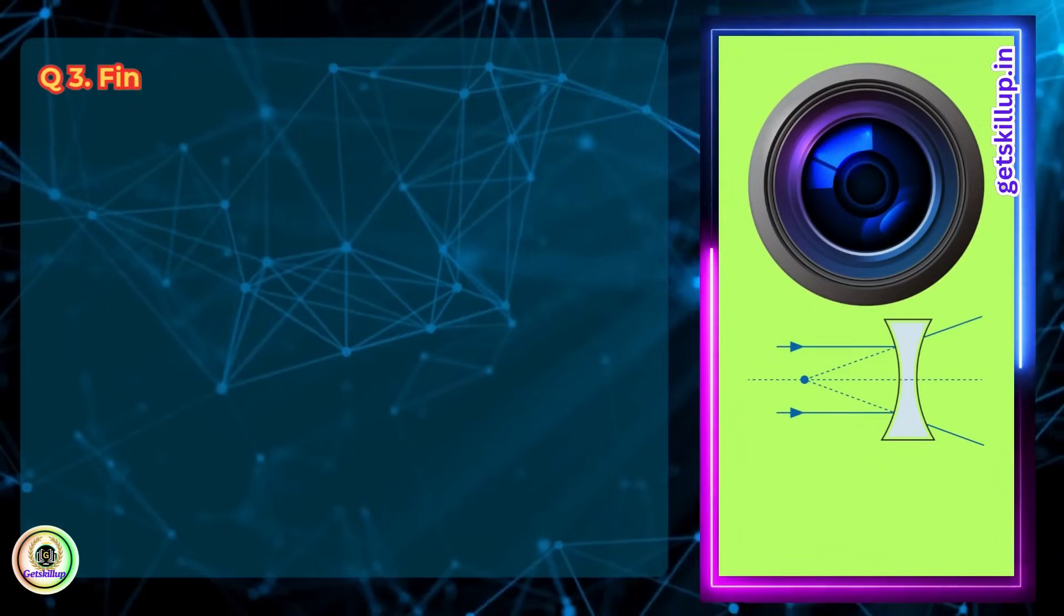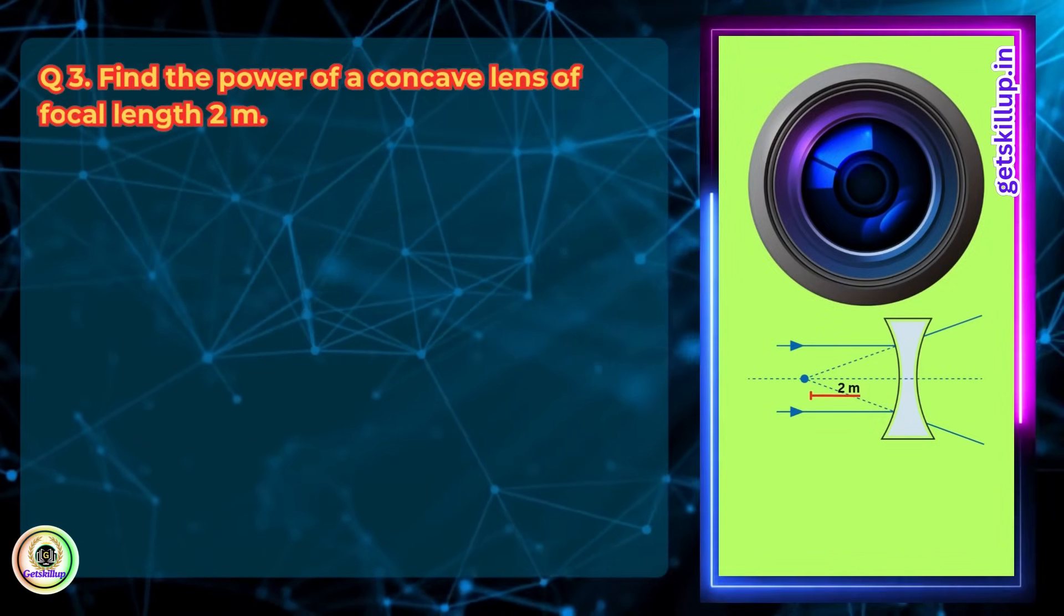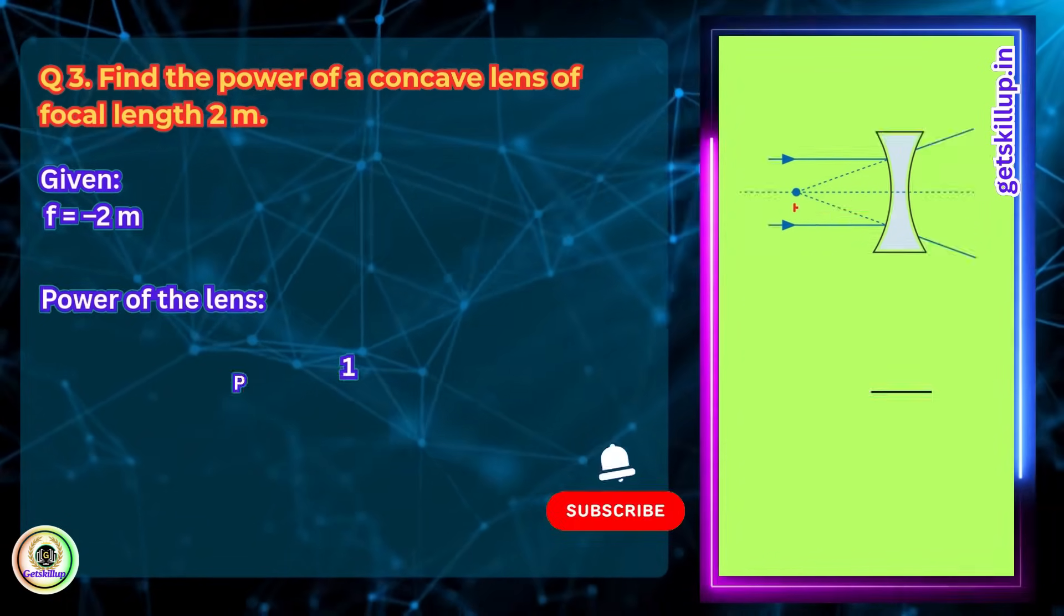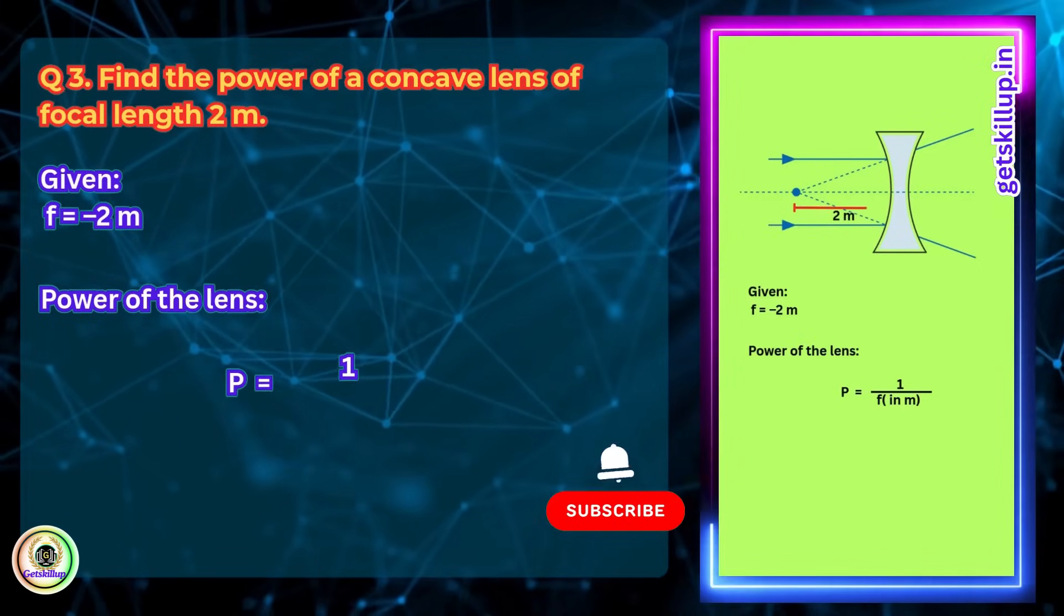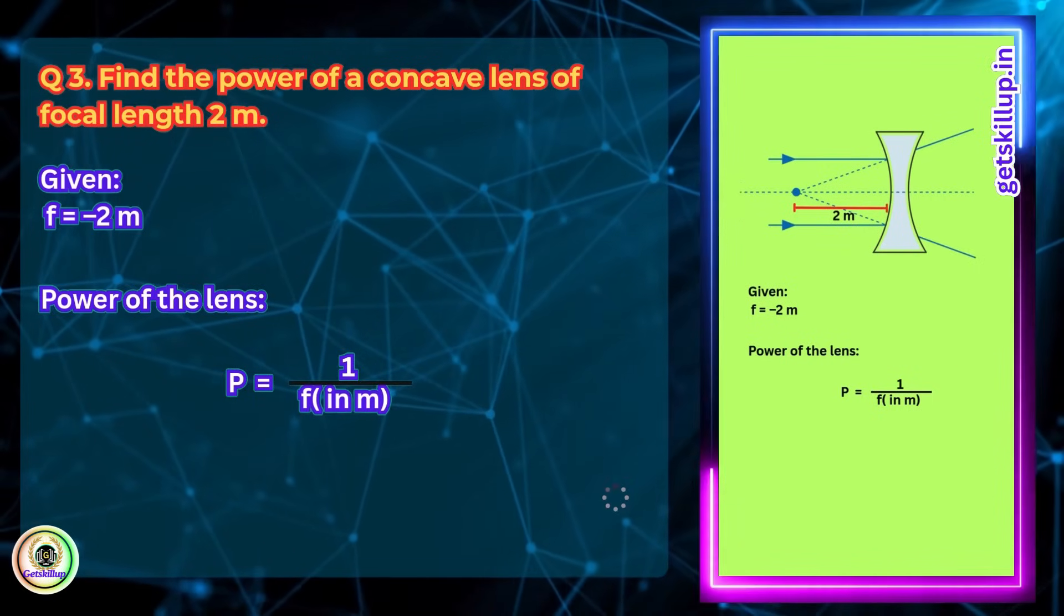Question 3: Find the power of a concave lens of focal length 2 meters. For a concave lens, focal length f is negative. Given: f = -2 m. P = 1/f (in m) =